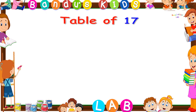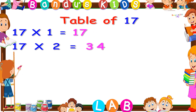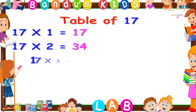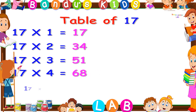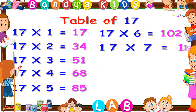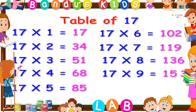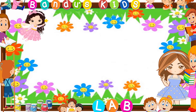Now let's revise the table of 17 one more time by singing. 17 1s are 17, 17 2s are 34, 17 3s are 51, 17 4s are 68, 17 5s are 85, 17 6s are 102, 17 7s are 119, 17 8s are 136, 17 9s are 153, 17 10s are 170.